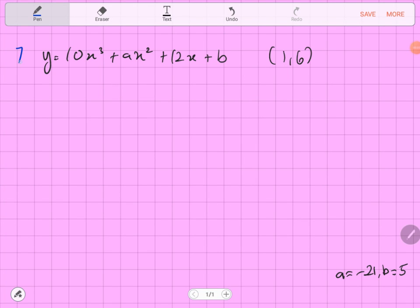For question number 7, Michelin chapter 9, they say that this curve has a minimum point at minimum value 6 at x equal to 1. This 6 is the y-coordinate of the minimum point, so we can say that 1, 6 is the minimum point.